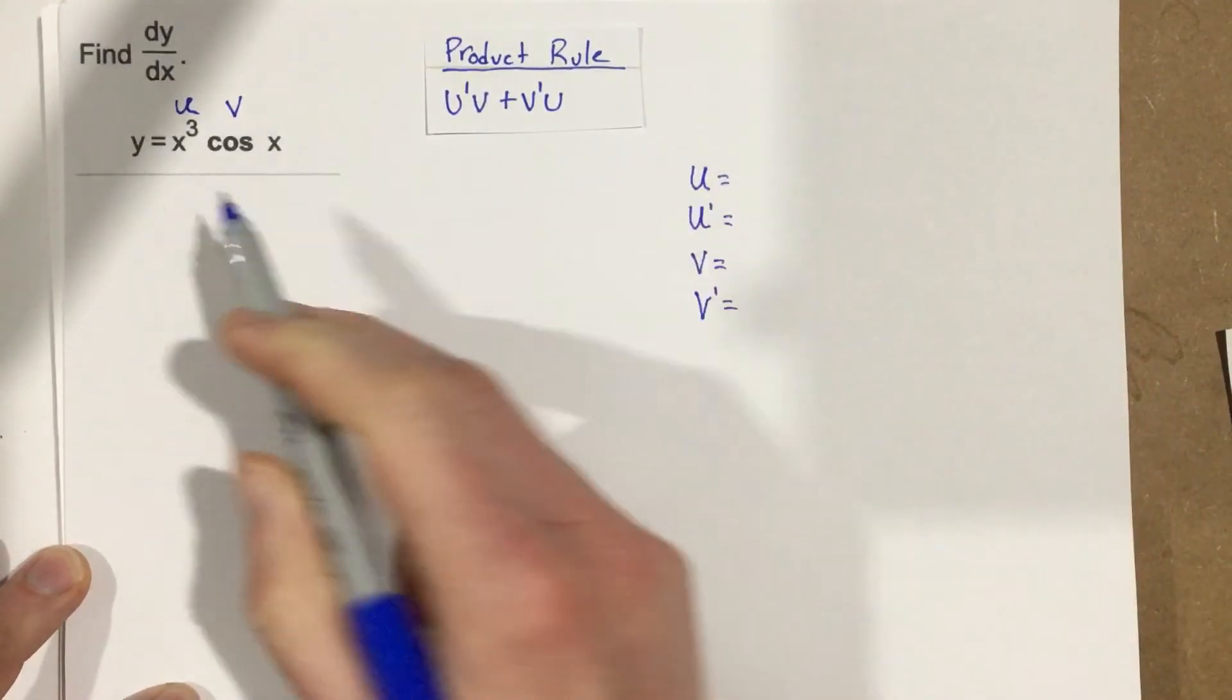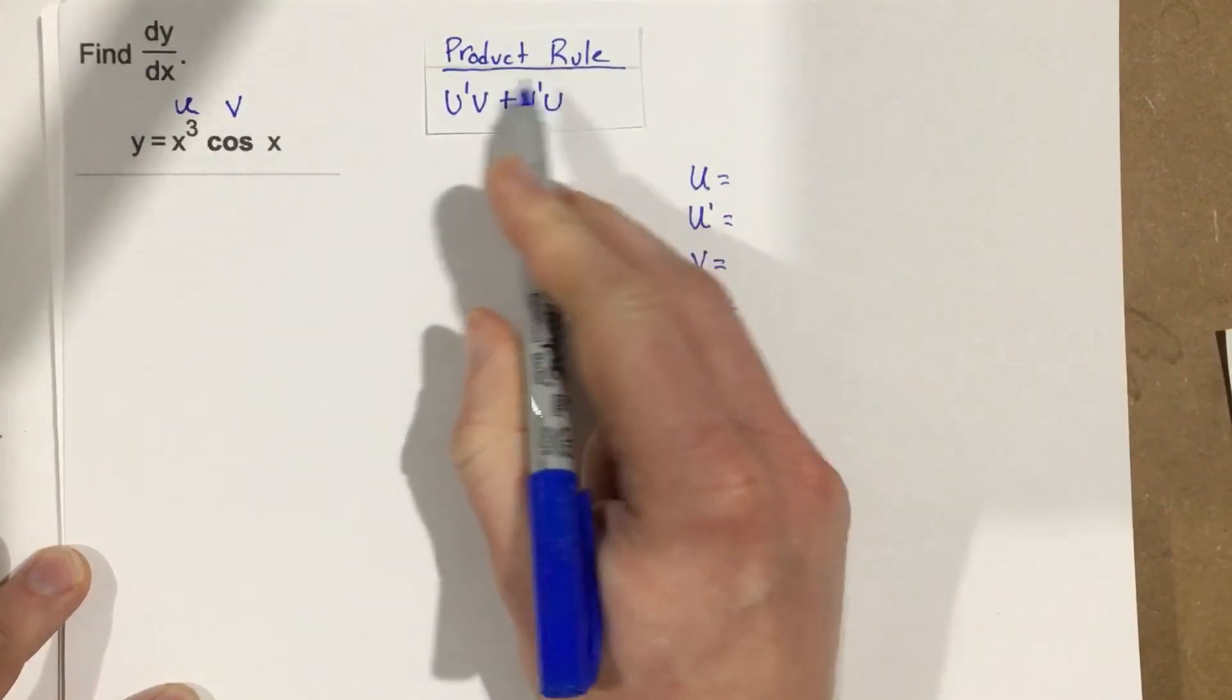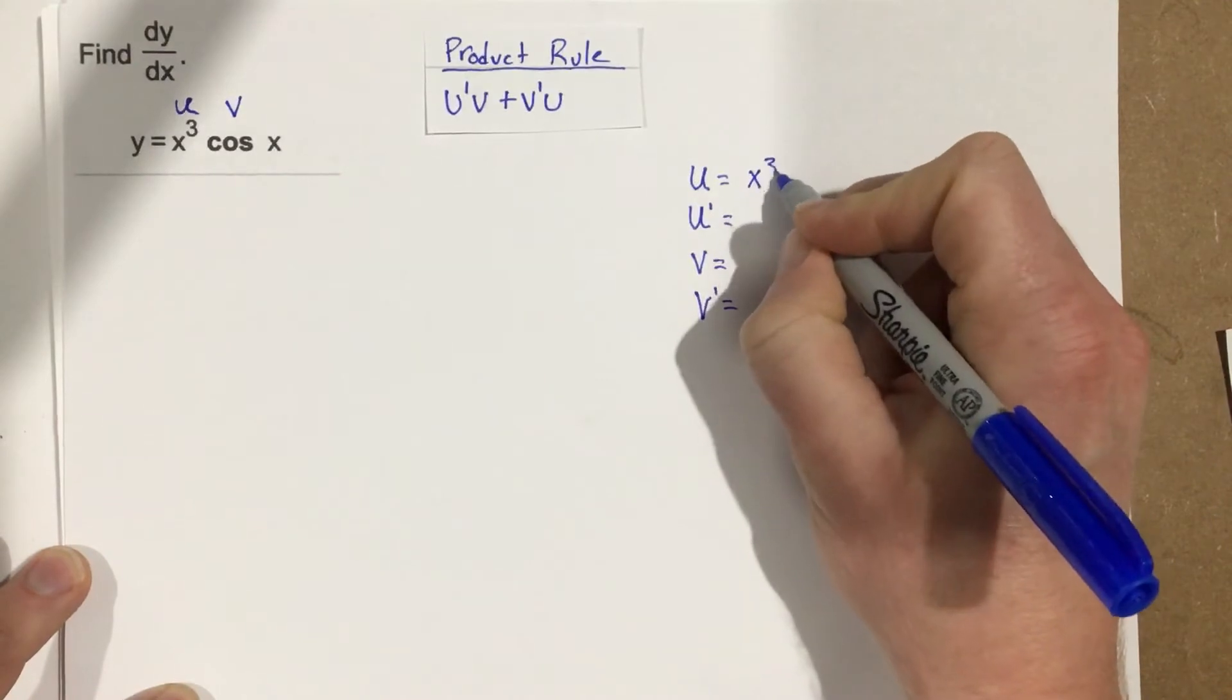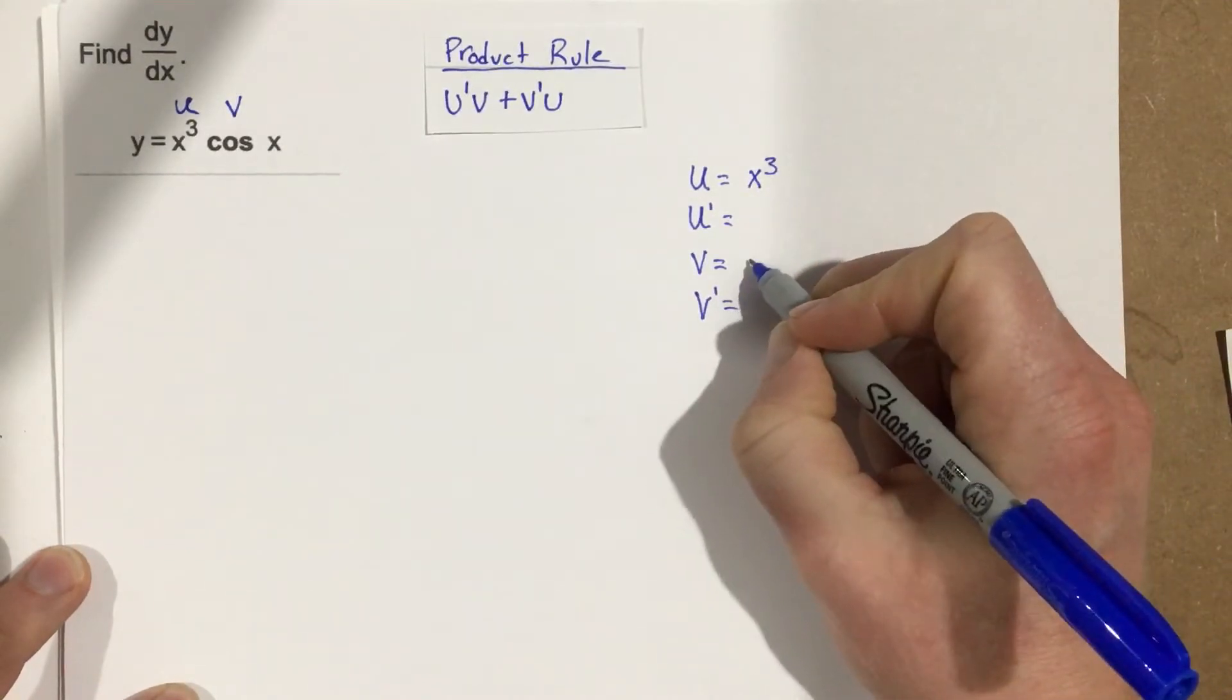I want to take the derivative of each function individually and then we're going to use the rule to complete the derivative. So x cubed is u, and v is cosine x.